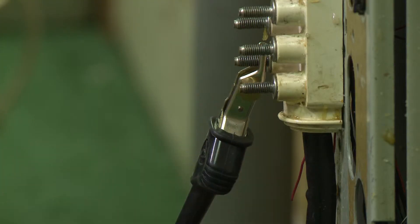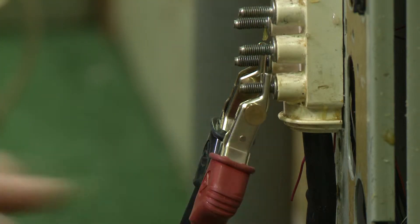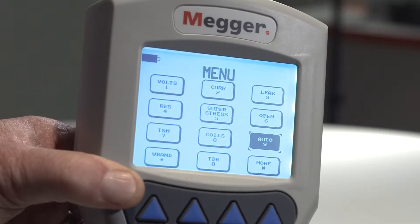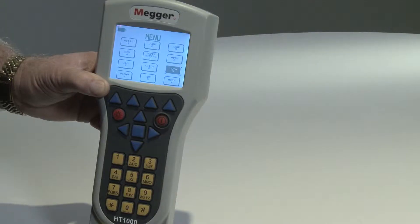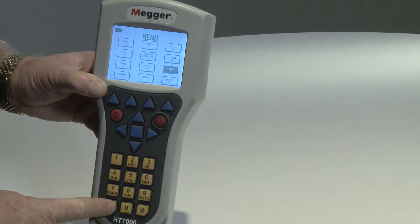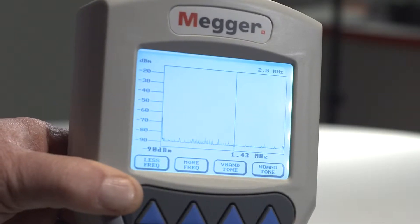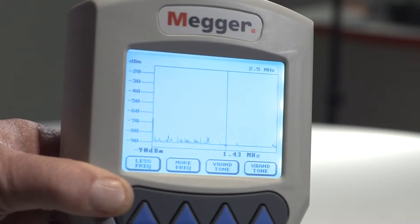Connect the test leads black to tip, red to ring, and green to ground. From the main menu, access the Wideband Spectrum Analyzer by pressing the asterisk key on the alphanumeric keypad. The receive mode Spectrum Analyzer graph will display.